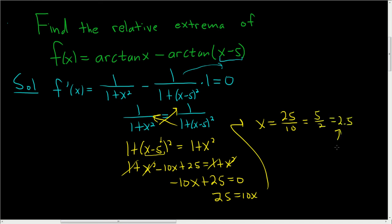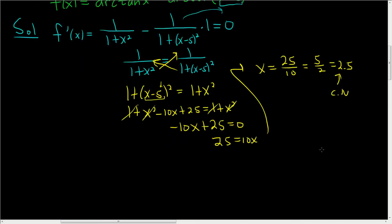So that's our critical number. I'll call it a cn. Now what we'll do is use the first derivative test. So we will plot our critical number on a number line. And we're going to pick test points, and we're going to plug them into the first derivative. If the first derivative is positive, the function is increasing. If it's negative, the function is decreasing.